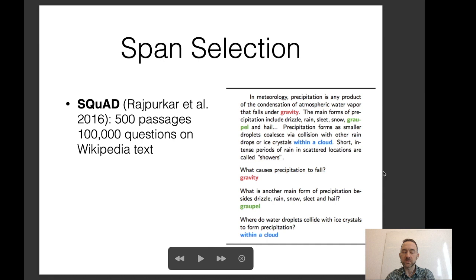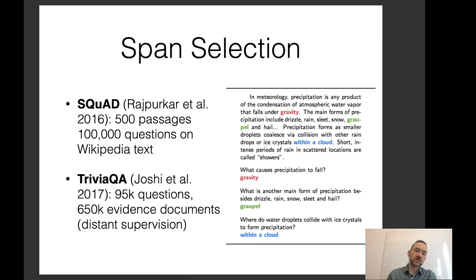SQuAD is a very famous example of span selection QA — it has 500 passages and 100,000 questions on Wikipedia text. There are lots of other examples too, like TriviaQA, which has 95K questions and 650K evidence documents. There are many datasets across various domains and with various desiderata.